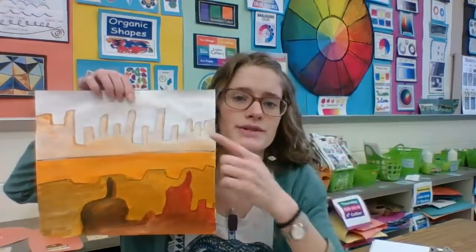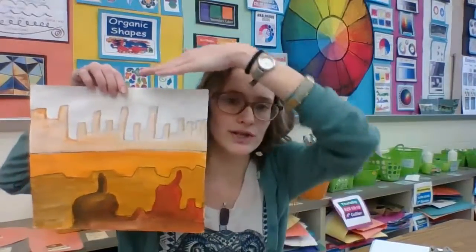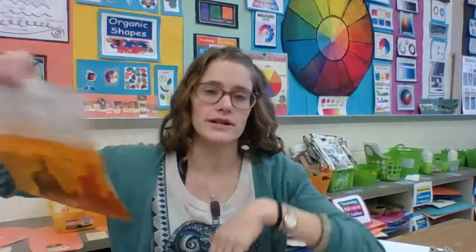Now the main thing is you want to start with your four lines, one, two, three, four, which divides the space into five sections, and then you range from the sky down to the darkest value.